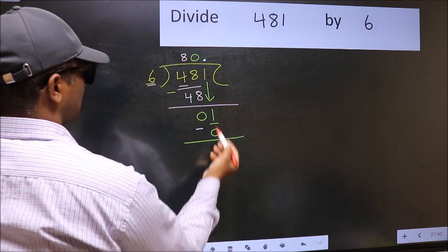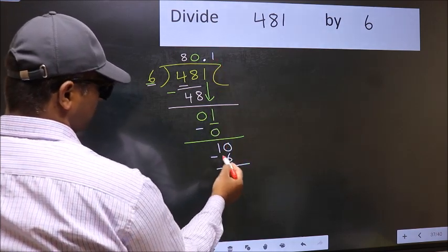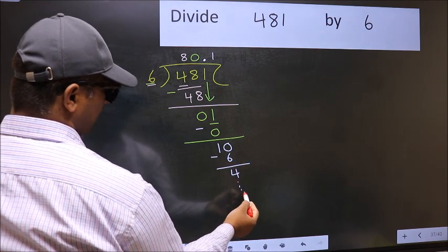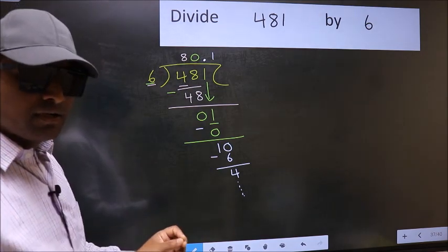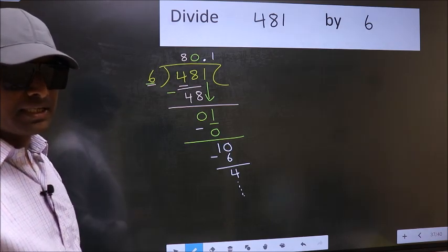A number close to 10 in 6 table is 6 once, 6. Now you subtract: 10 minus 6 is 4. And continue the division. I am not doing that. Did you understand where the mistake happens? You should not do that mistake.